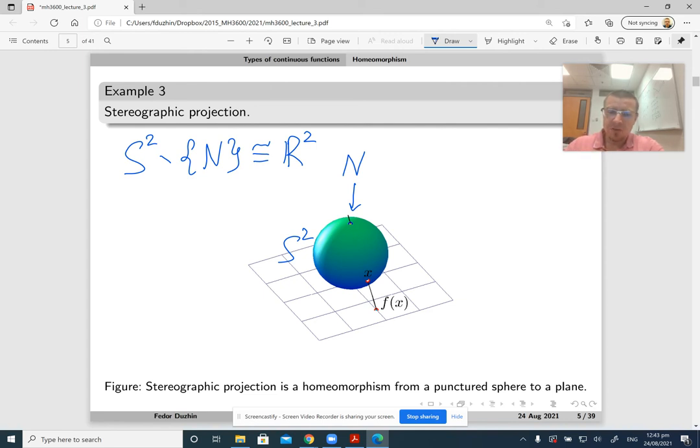In order to construct this homeomorphism, we choose any point x on the sphere, then draw a straight line from N to x, and then see where that straight line intersects our plane. That point on the plane is called f of x. Notice that on this picture, the plane is drawn so that my sphere lies entirely on one side of the plane.